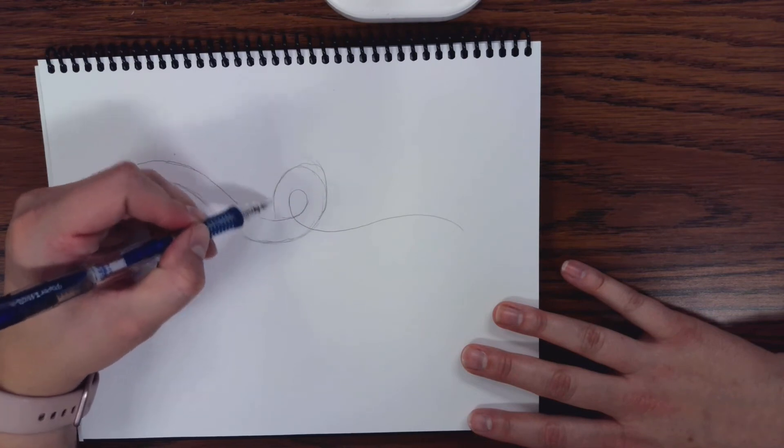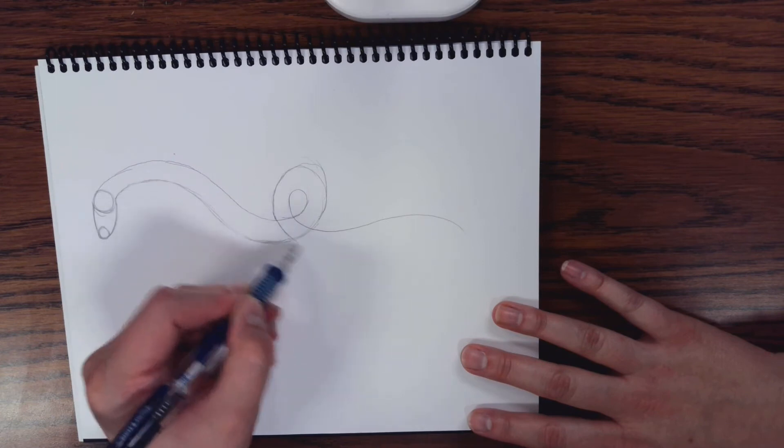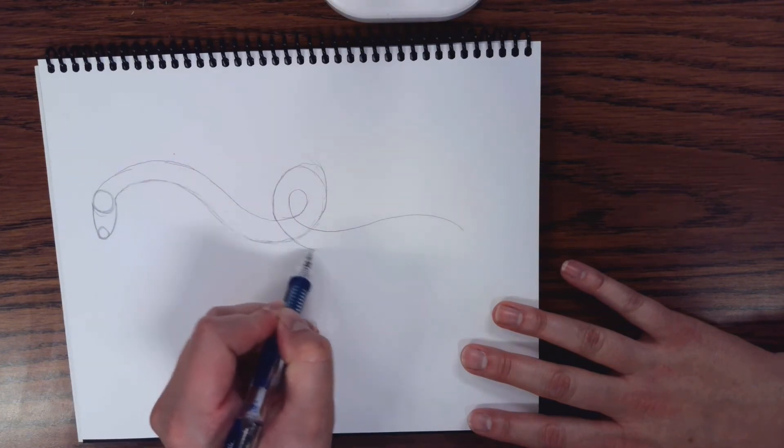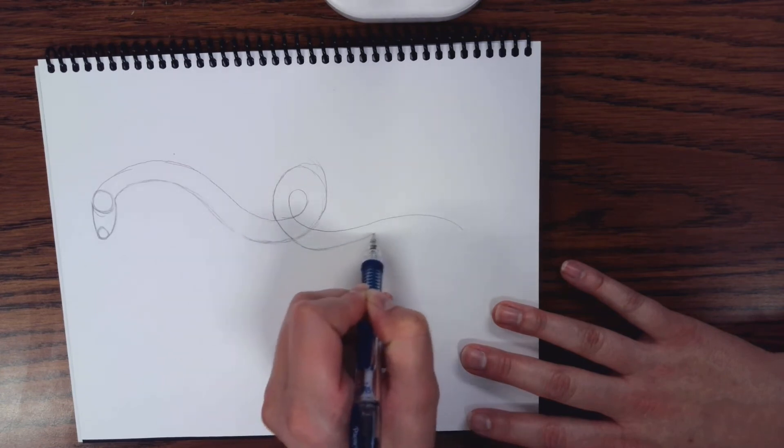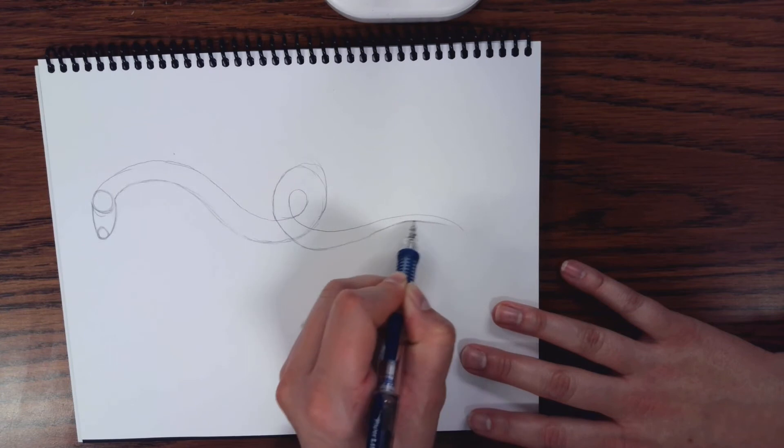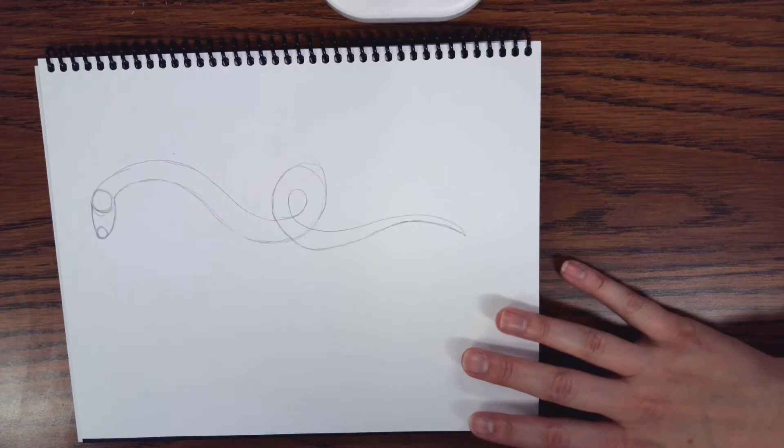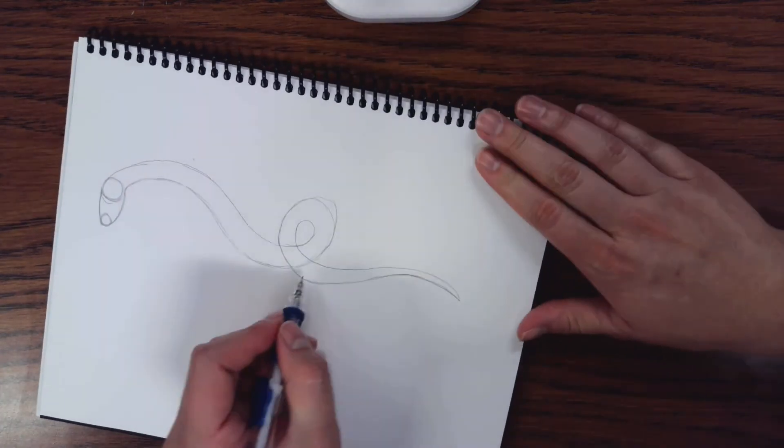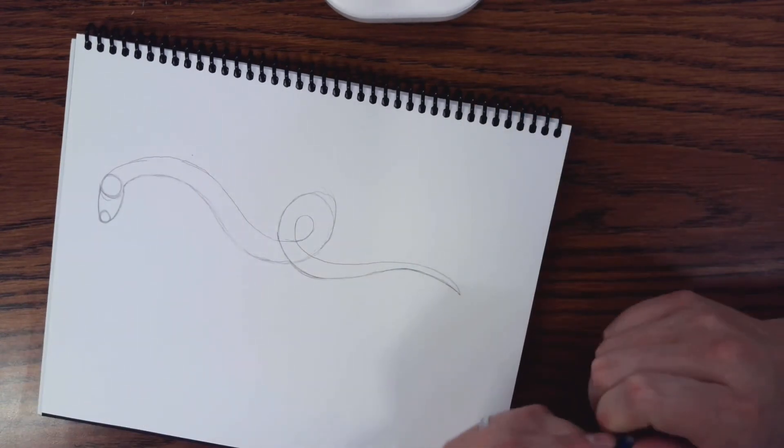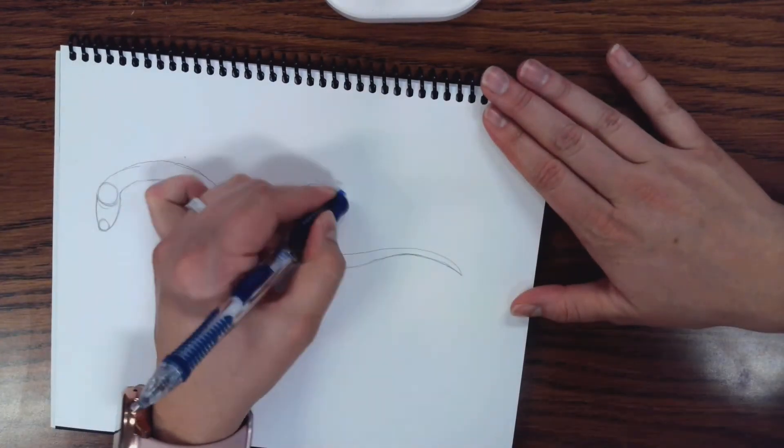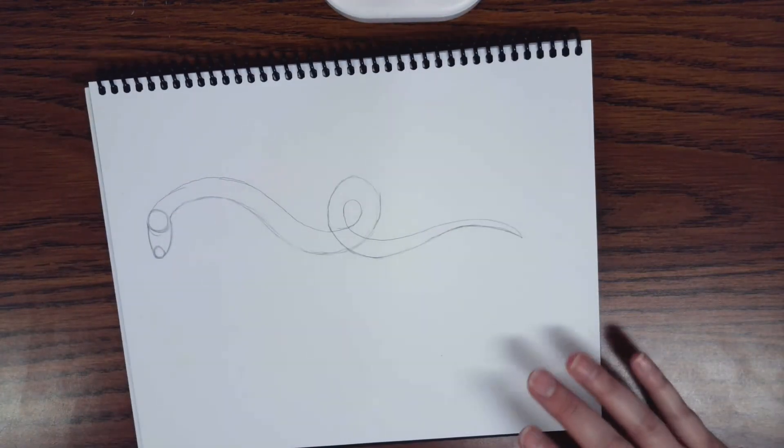And then you're just going to taper that line to the back. I did say that the snake was the closest guess. So we're going to stop here for a sec. I'm going to erase all the lines that I don't need.